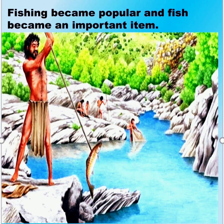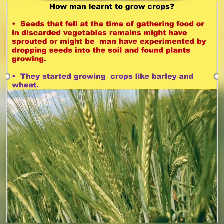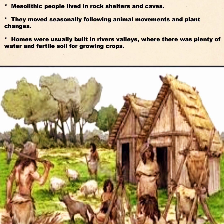Fishing became popular and fish became an important food item. How did man learn to grow crops? Seeds that fell at the time of gathering food, or in discarded vegetable remains, might have sprouted. Man may have experimented by dropping seeds into the soil and found plants growing. They started growing crops like barley and wheat.